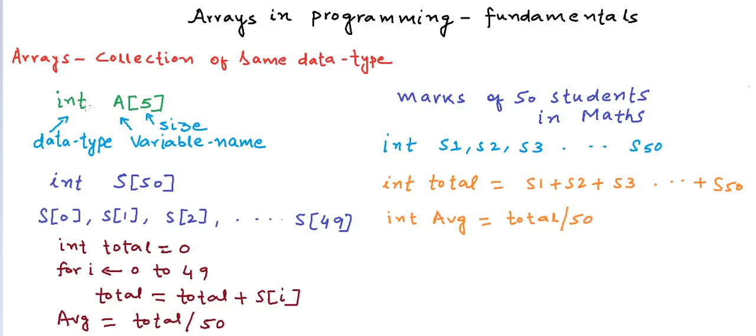This was an array of integers. We can also have an array of float or an array of character or an array of a user defined class or structure. This was a simple one dimensional array. We can also have arrays of two dimension or three dimension.